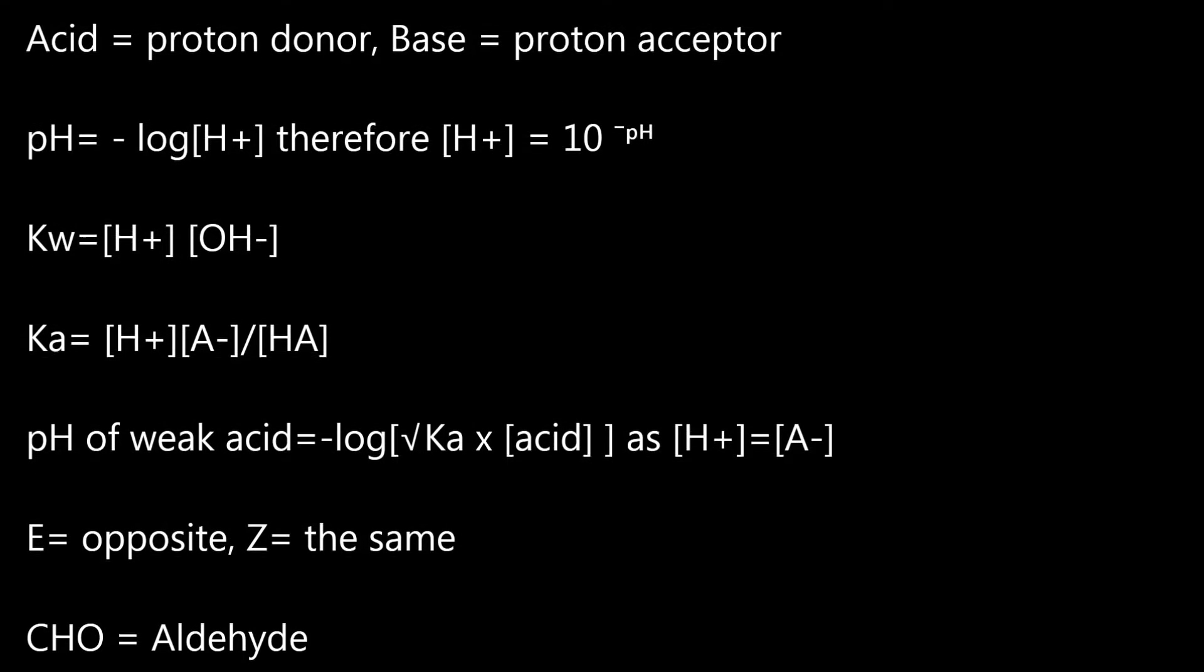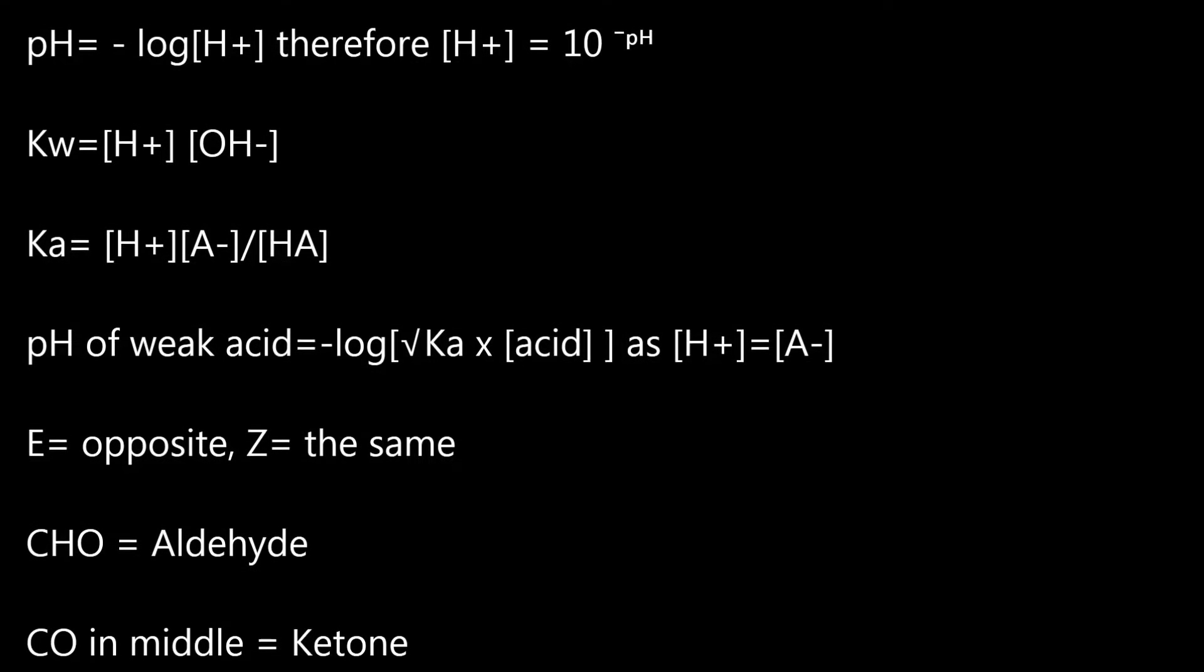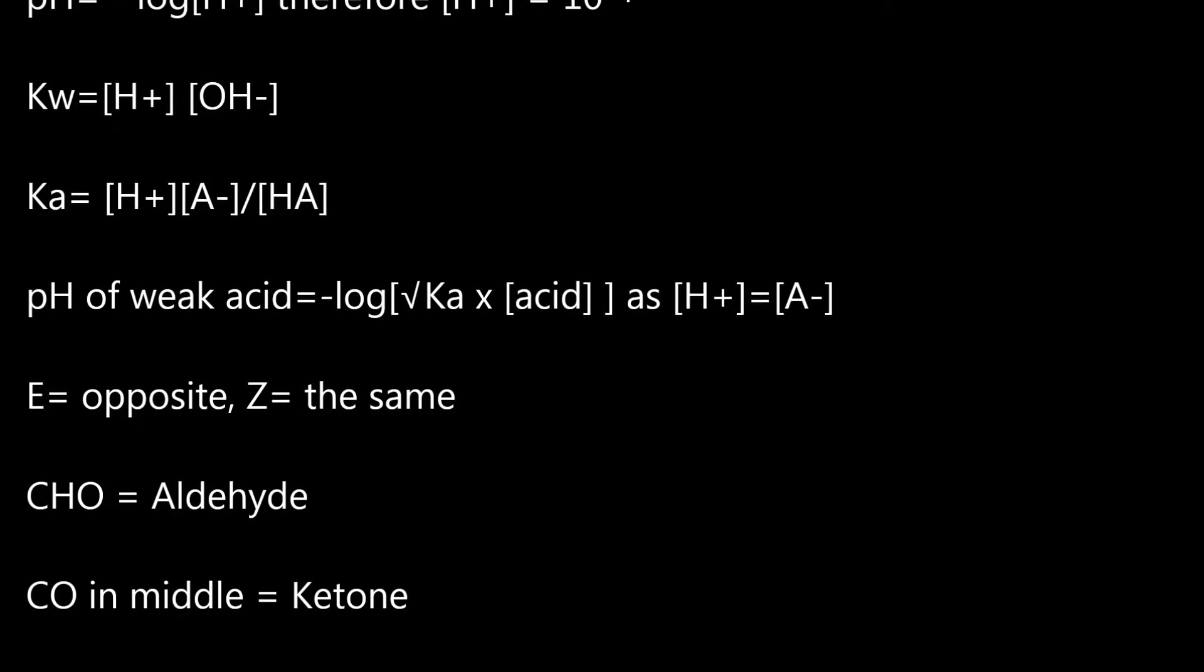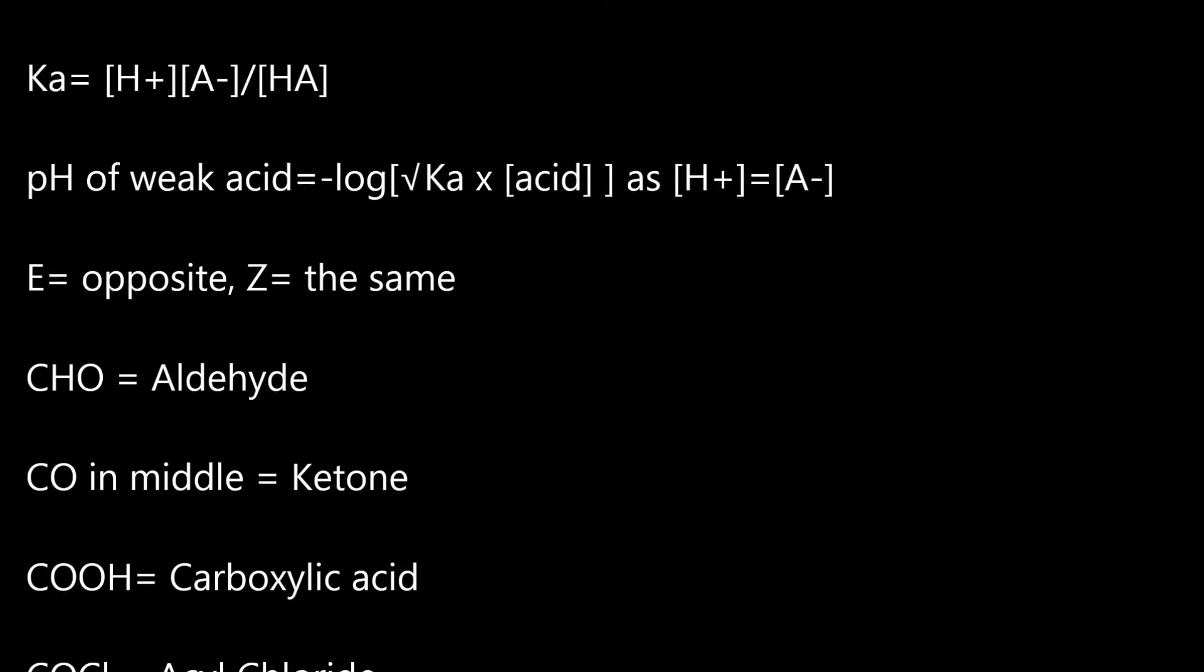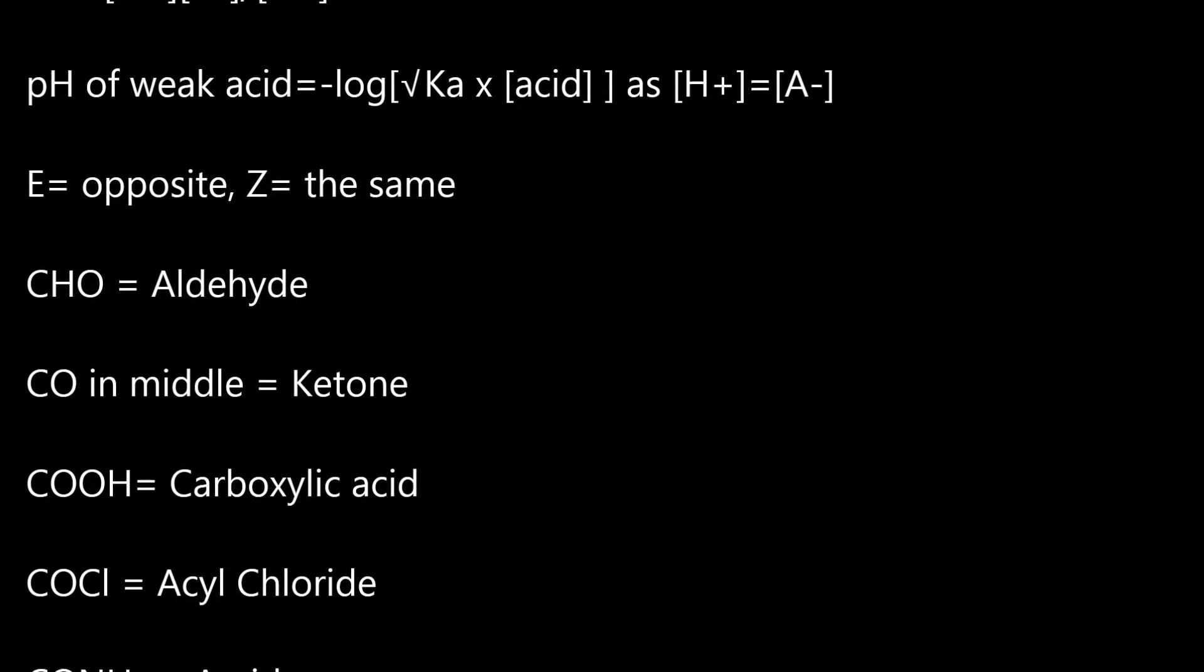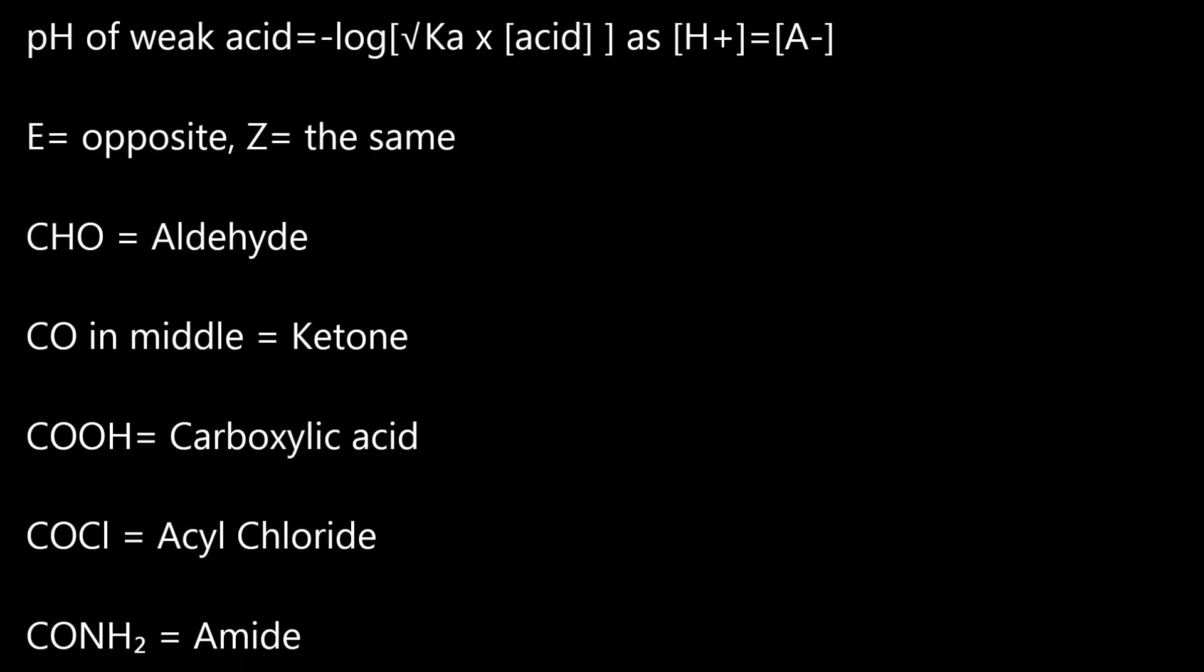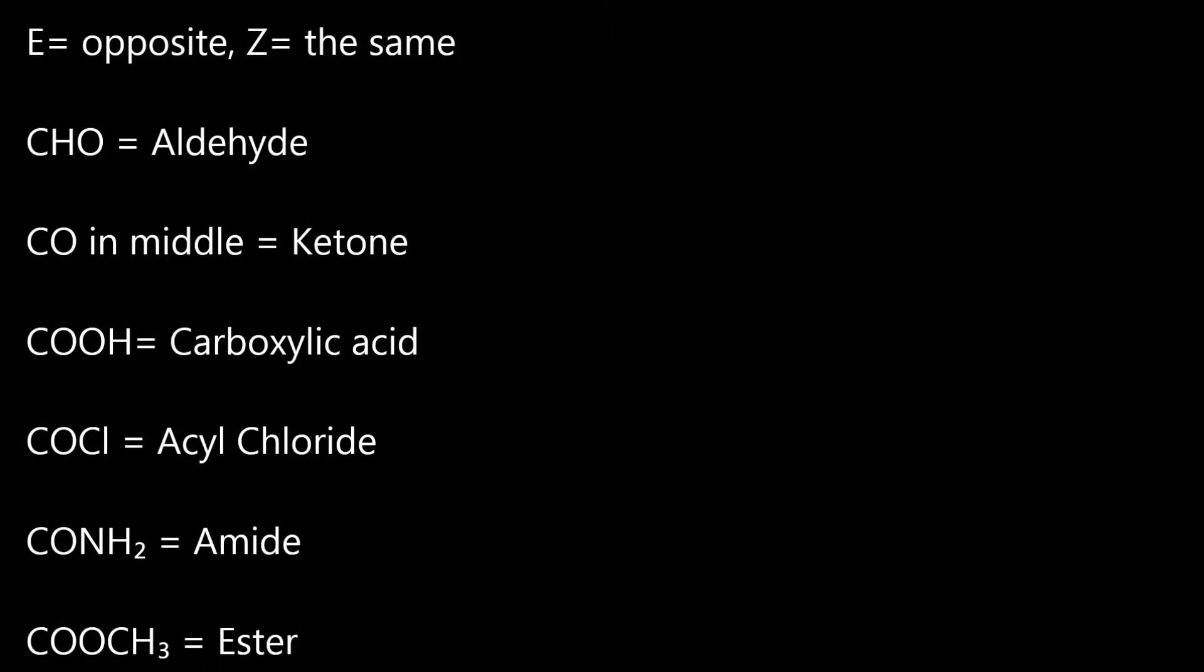E equals opposite, Z equals the same. CHO equals aldehyde, CO in middle equals ketone, COOH equals carboxylic acid, COCl equals acyl chloride, CONH2 equals amide, COOCH3 equals ester, R2O equals acyl anhydride.